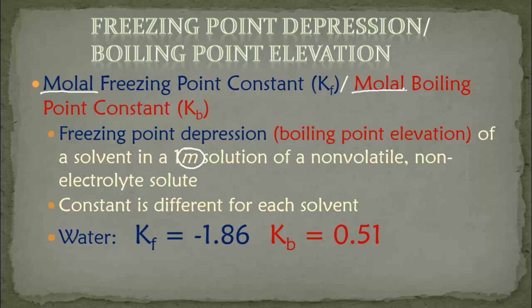The constants are different for each solvent. The solvent we are going to focus on is water, and these values you will have to memorize. If I give you a solvent other than water, I will give you the KF or KB value. But for water, you should be able to remember these two numbers — F for freezing, B for boiling.